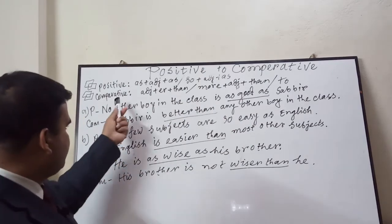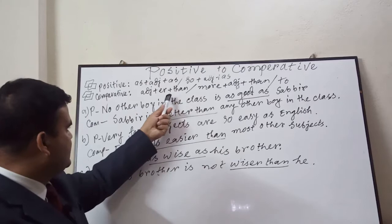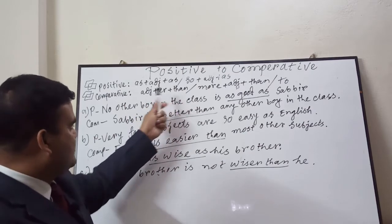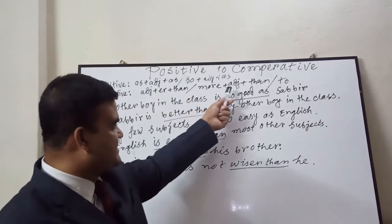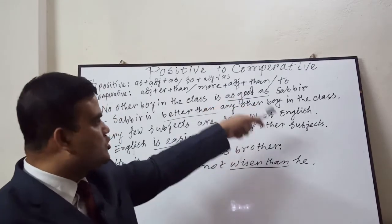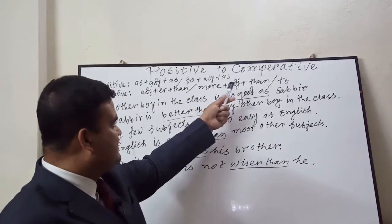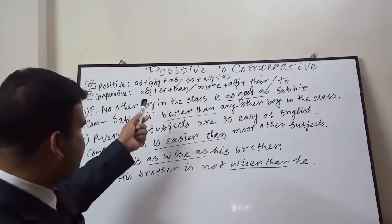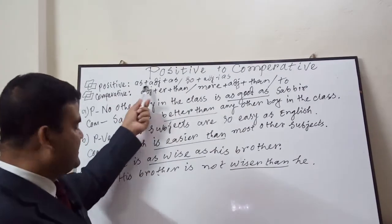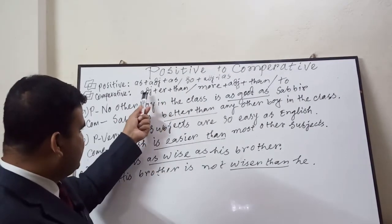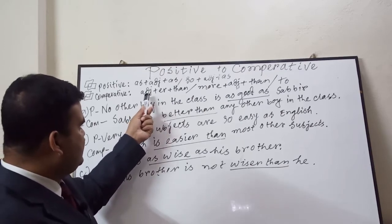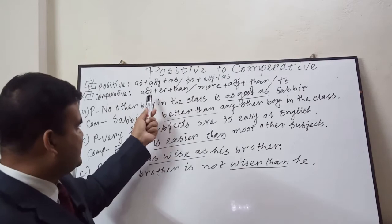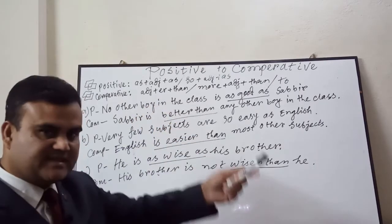The gist of comparative is adjective plus '-er' than. It can be fine → finer than, nicer than, or prettier than. That is, we need to add '-er' after the adjective. Like: fine → finer, nice → nicer, pretty → prettier.